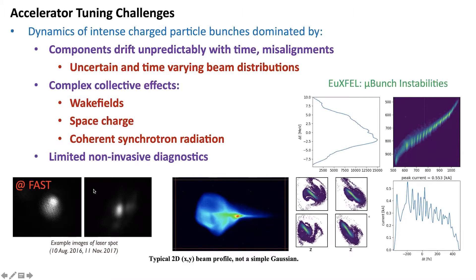For example, here's just a laser image spot from an FEL cathode. Over time, it changed without anyone really doing anything — maybe the quantum efficiency of the cathode changes, maybe something about the laser changes. That completely changes your initial bunch distribution, your 6D phase space of your beam coming into your accelerator. Bunches themselves are pretty complicated — they're not just nice spheres or ellipsoids. You get these clouds, these halos.